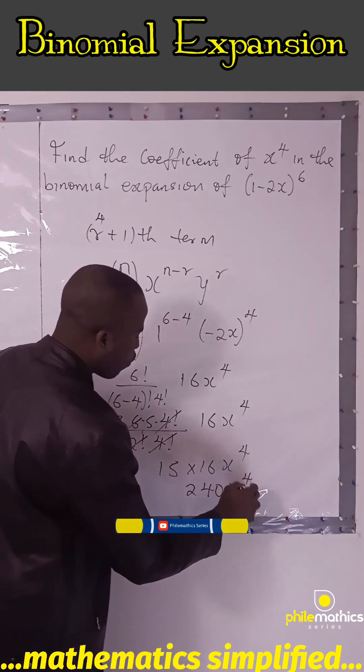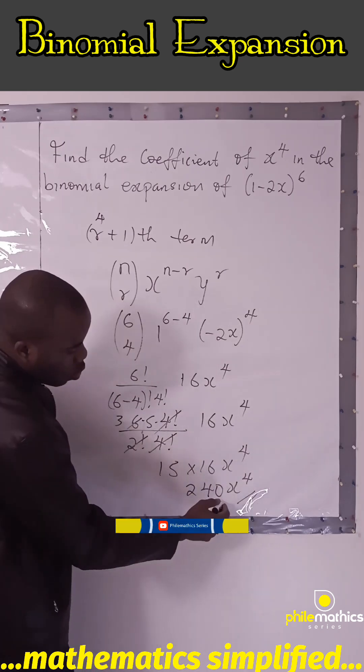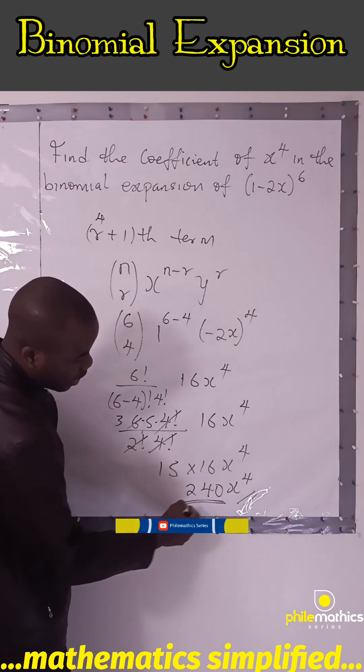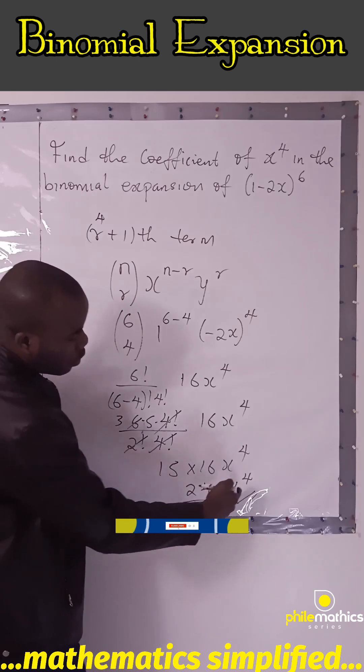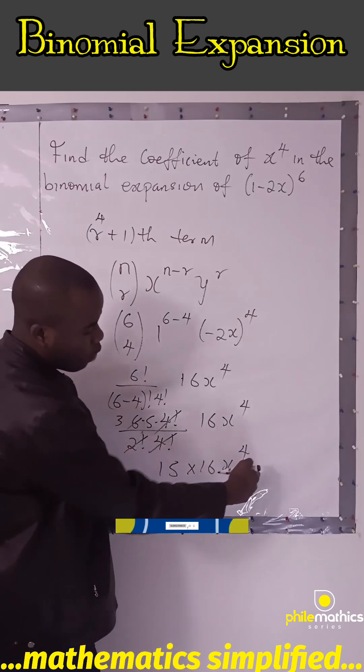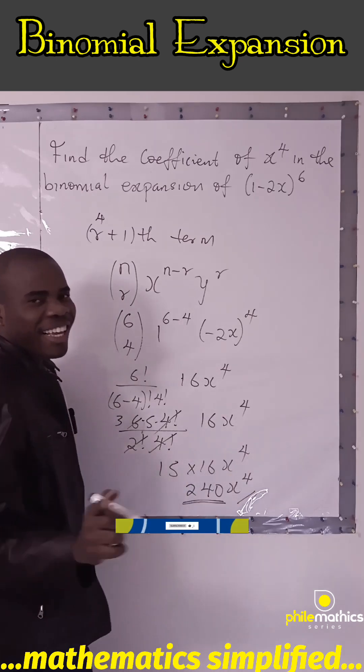15 times 16 is 240 x to the power 4. So the coefficient of x to the power 4 is 240. Thank you for watching.